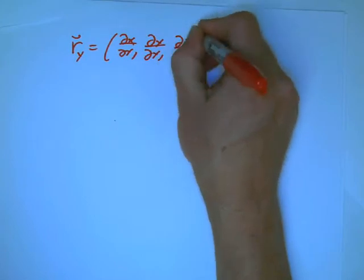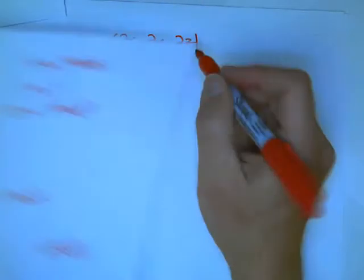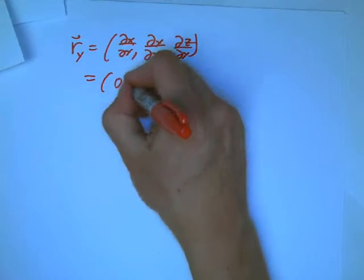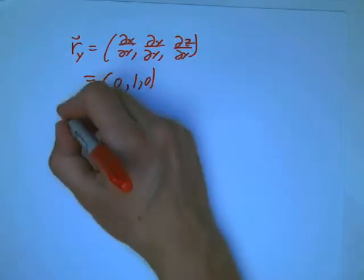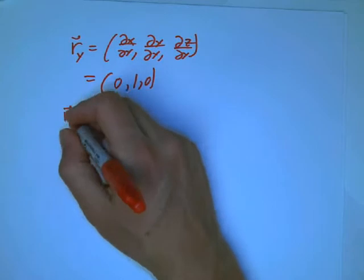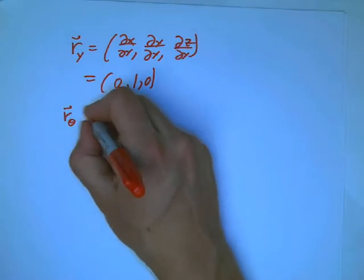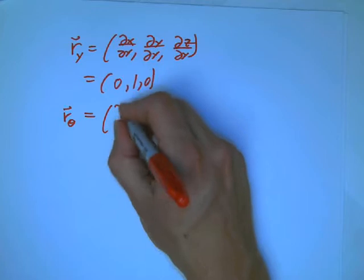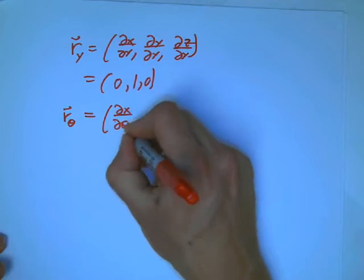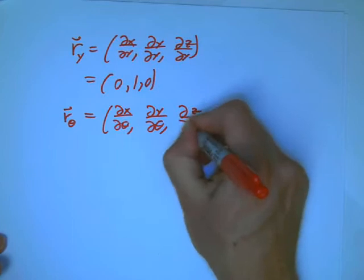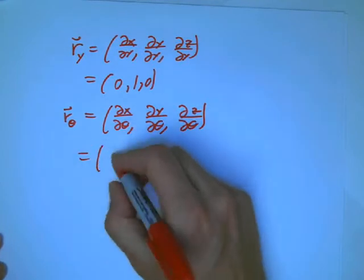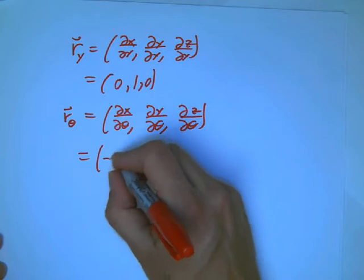So, let's come back to that and look at r sub y. That's pretty easy. That's dx dy, dy dy, dz dy. Well, the only one that y comes into is y itself. And so, that's 0, 1, 0. That's reflecting the fact that these straight lines are part of our grid system. They're always just pointing in the y direction, no matter where you are, with one unit vector.